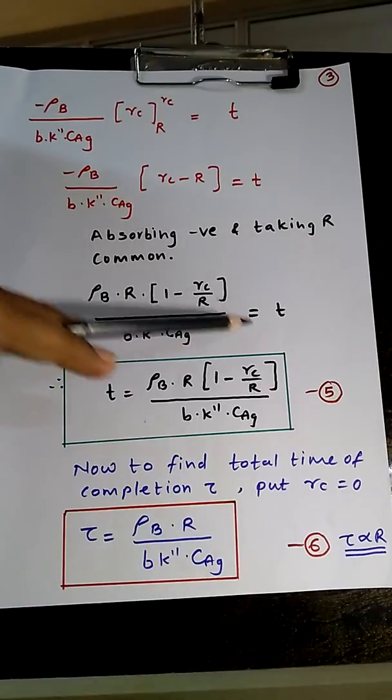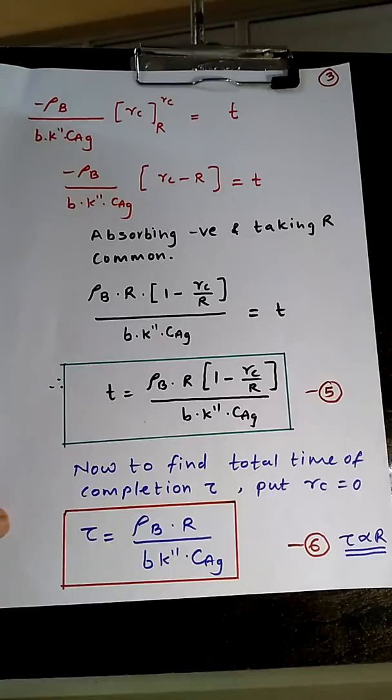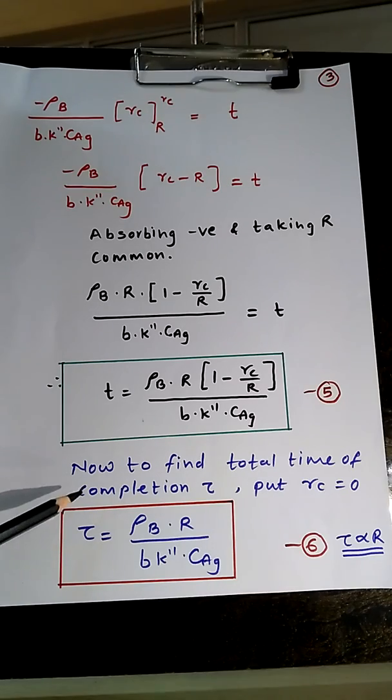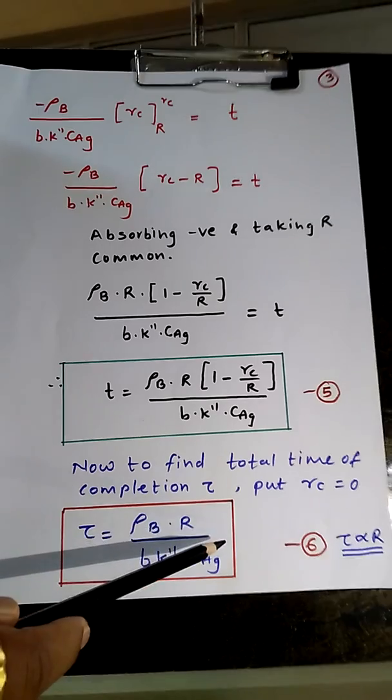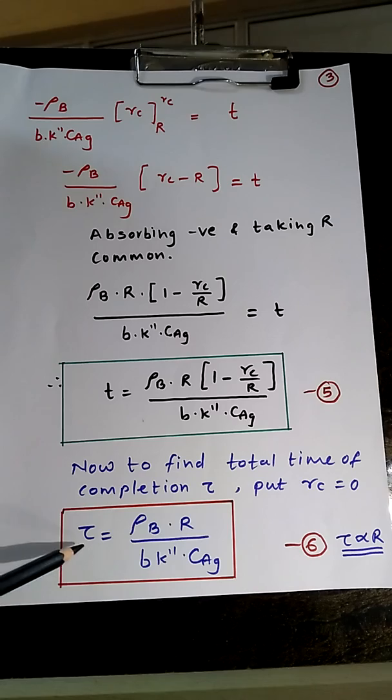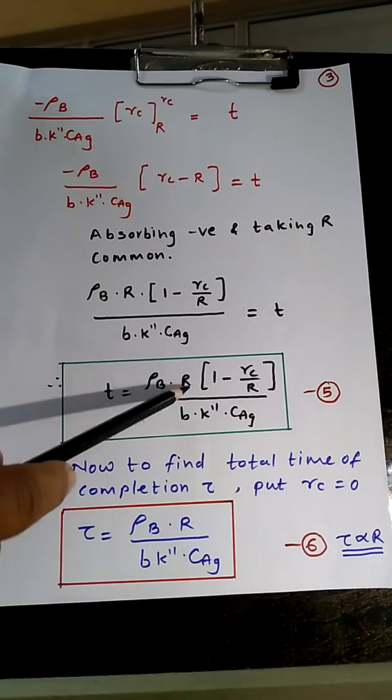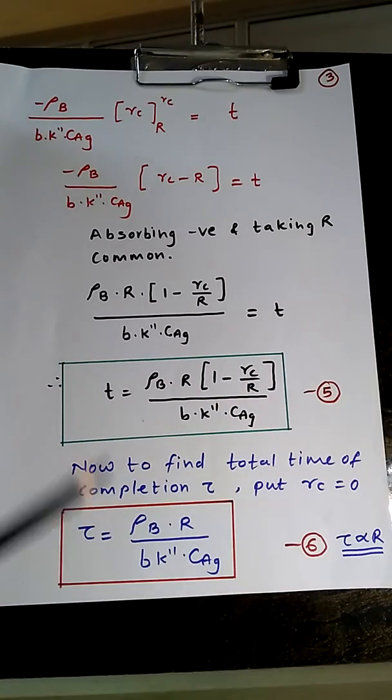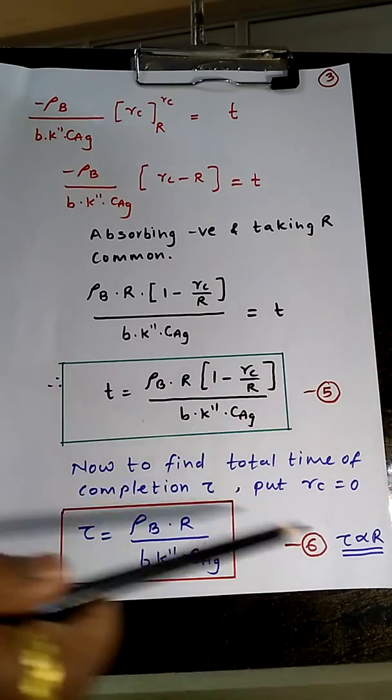Now this will be our expression for time. We can calculate the time for change of the particle size from R to Rc using this expression. Now we can replace t by τ, Rc by 0, and thus we get the total time of reaction for our case. So τ = ρB R / (bk''CAG) because this bracket will come 1 after substituting Rc = 0.